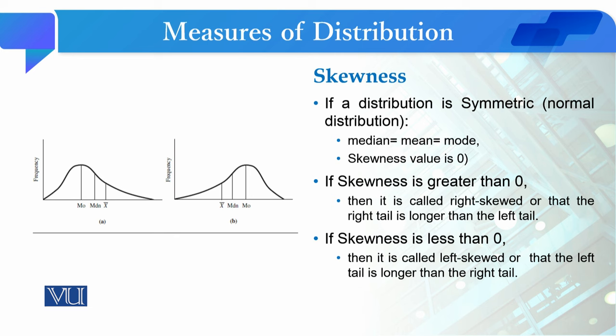Skewness کی value اگر negative sign کے ساتھ ہے تو ہم یہ کہتے ہیں کہ data negatively skewed ہے، اور اگر value positive sign کے ساتھ اور above zero ہے تو data positively skewed ہے۔ Normal distribution کے لئے کتنی value tolerate کر سکتے ہیں اس پہ statisticians میں difference of opinion ہے۔ زیادہ تر کا ماننا یہ ہے کہ اگر value zero سے one کے درمیان ہو یا maximum zero سے two کے درمیان ہو تو ہم اسے tolerate کر سکتے ہیں اور کہہ سکتے ہیں کہ data normally distributed ہے۔